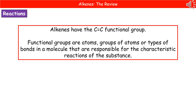The next term we need to be aware of is 'functional group'. When we talk about the functional group, we're referring to atoms or groups of atoms, or the types of bonds present in a molecule, which are responsible for the characteristic reactions of it. In the case of the alkenes, the functional group is the C double bond C — the group of atoms and bond which give it its characteristic reactions.